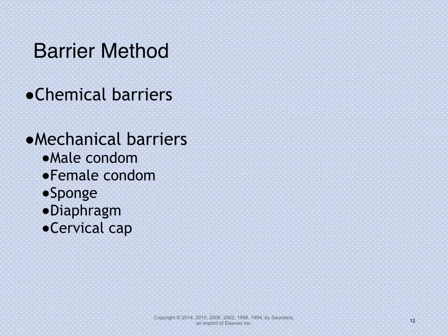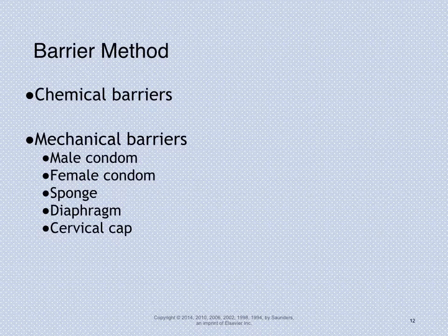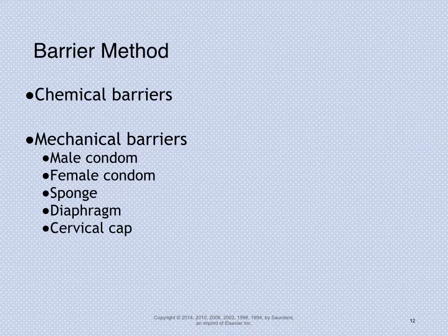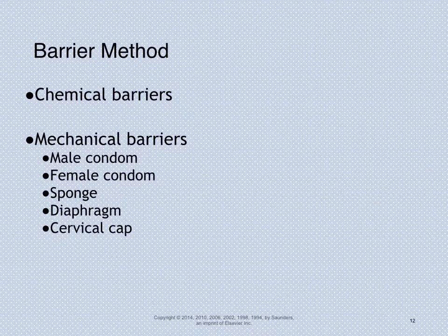Barrier methods include chemical barriers such as spermicide, which acts as a lubrication to reduce sperm viability inside the vagina, and mechanical barriers such as condoms, sponges, diaphragms, and cervical caps. When discussing barrier methods with patients, we want to review proper use as well as plans for backup birth control if these barrier methods are not used properly or if there's an error in use.